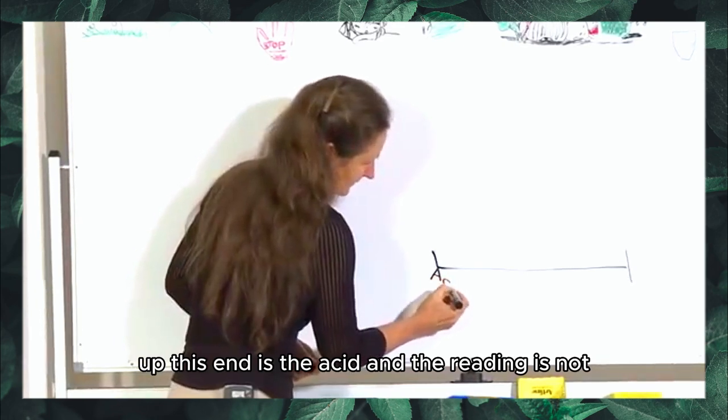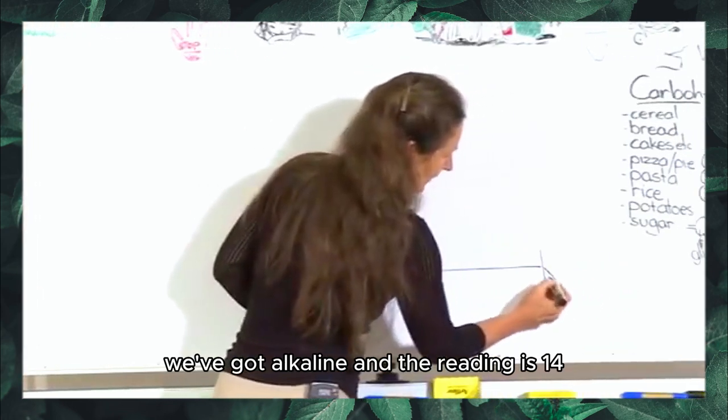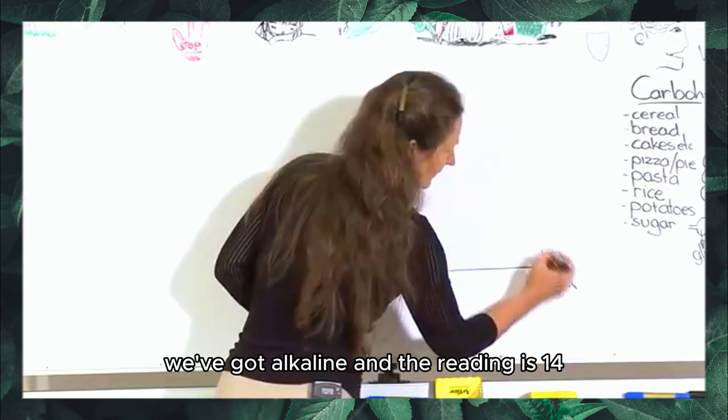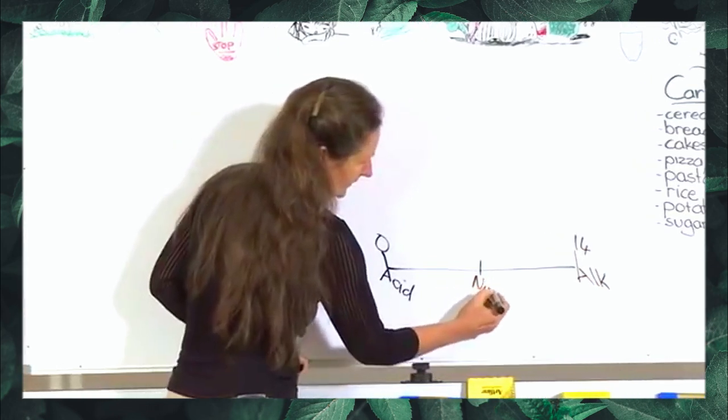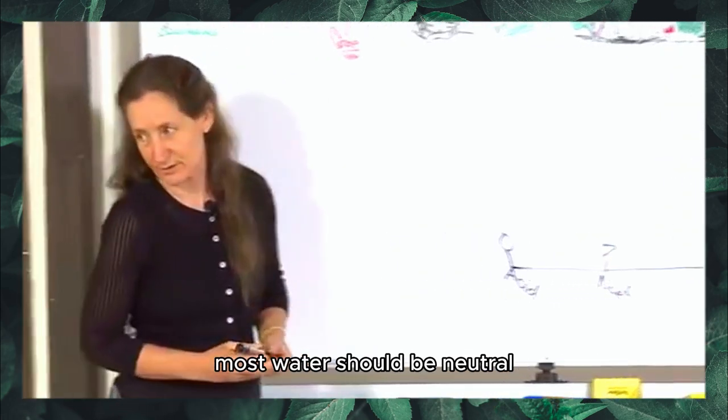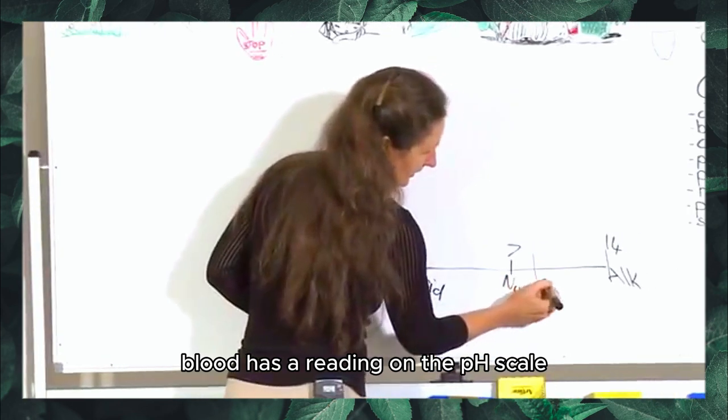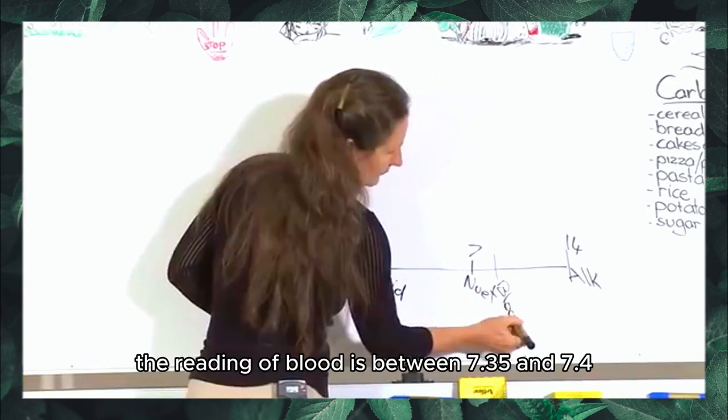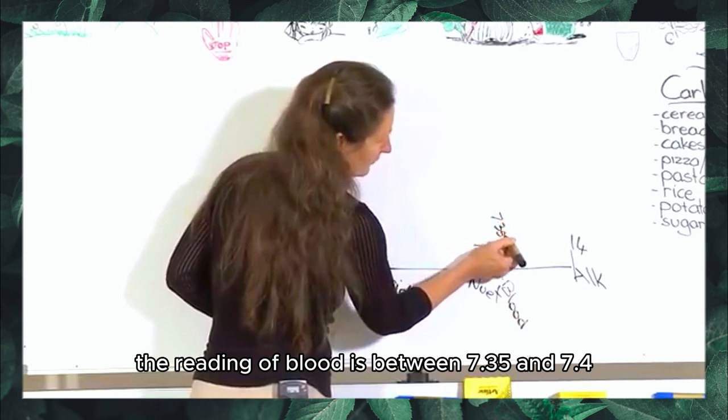Up this end is the acid with a reading of 0, and up the other end we've got alkaline with a reading of 14. In the middle we've got neutral with a reading of 7. Most water should be neutral, neither acid nor alkaline. Blood has a reading on the pH scale between 7.35 and 7.4.